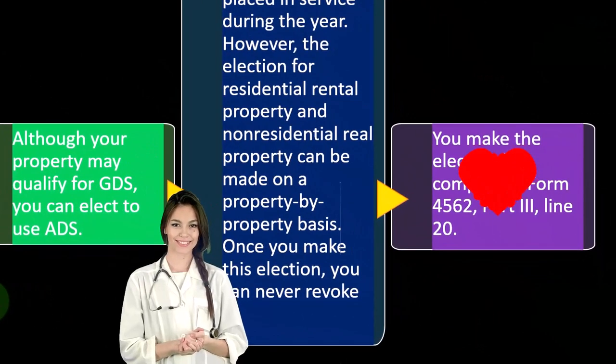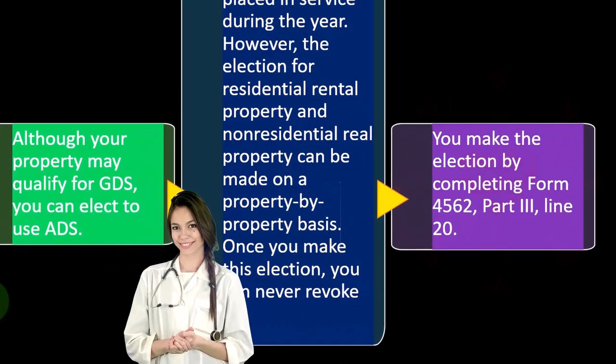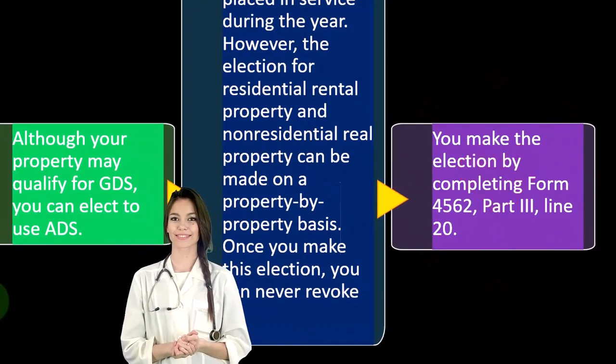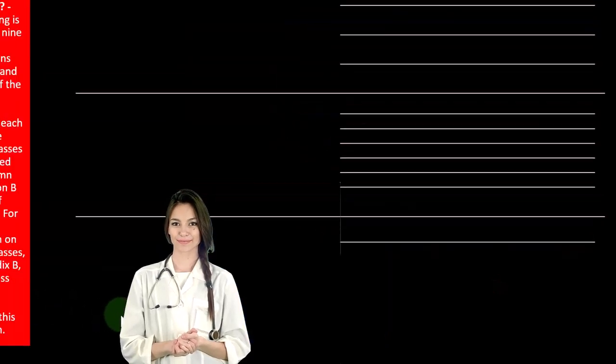Generally, you make the election by completing Form 4562, Part 3, line 20.